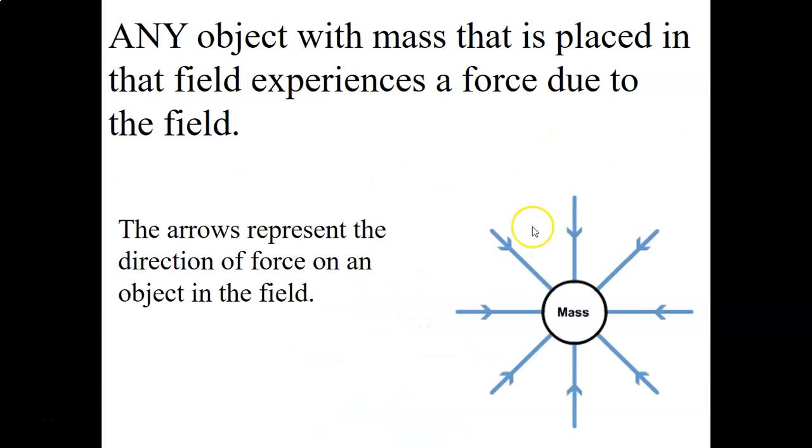So any object that's in this space, and these field lines would go on to infinity, just getting further and further apart, an object with mass in this space has a force on it, a force of gravity acting on it. And the direction of that force is the direction of the arrow of the field line. And of course, if I were to put an object here, it would also experience a force. It doesn't have to be on a field line. It just has to be, this represents the field around it.